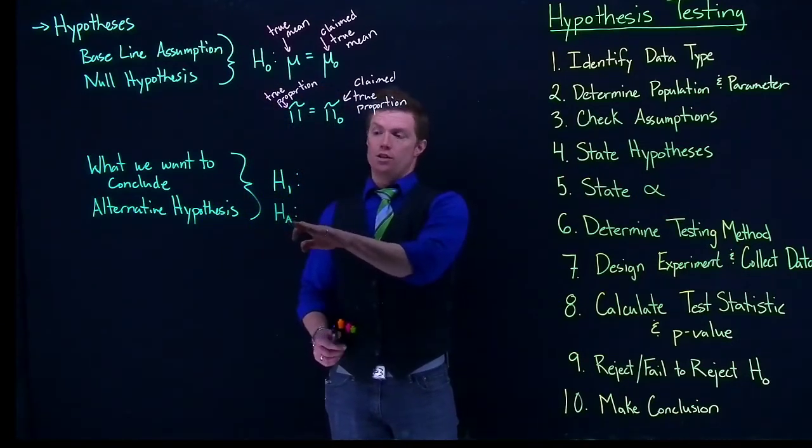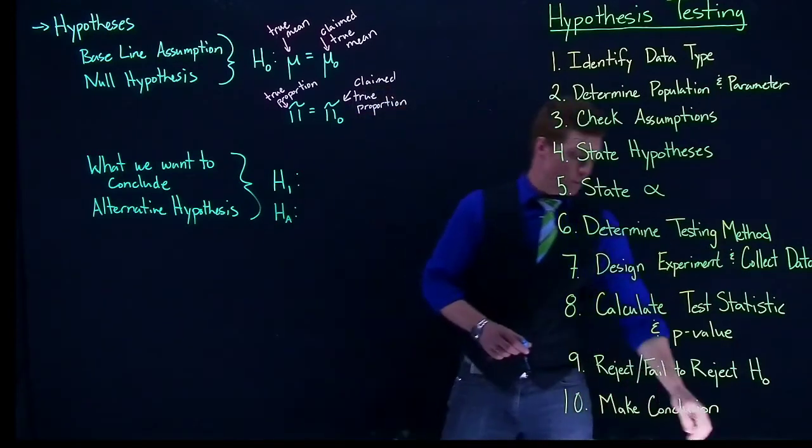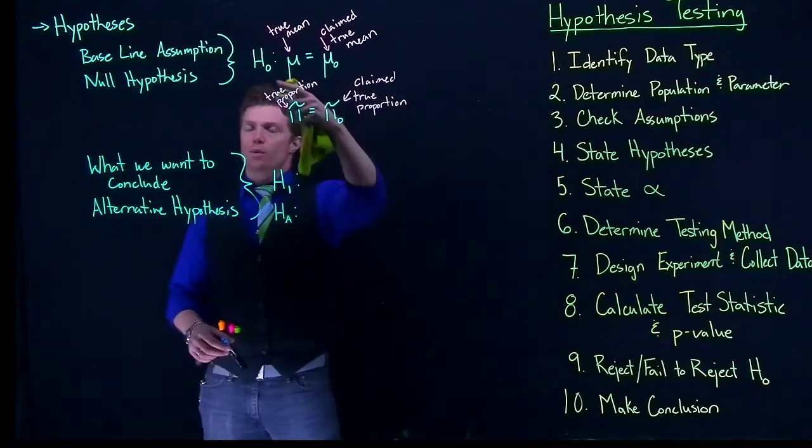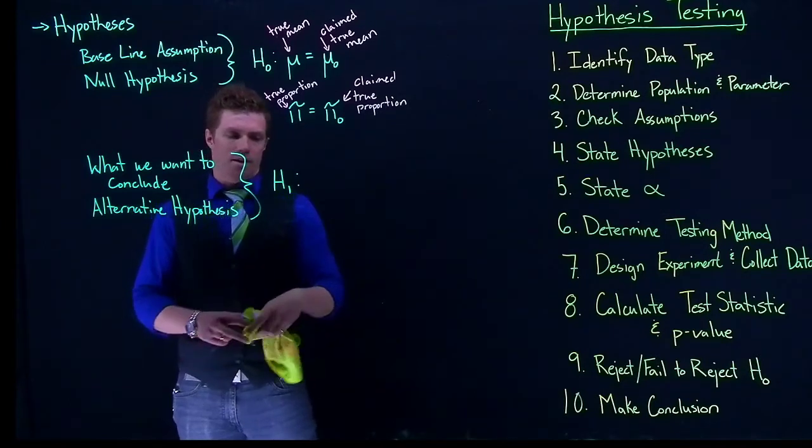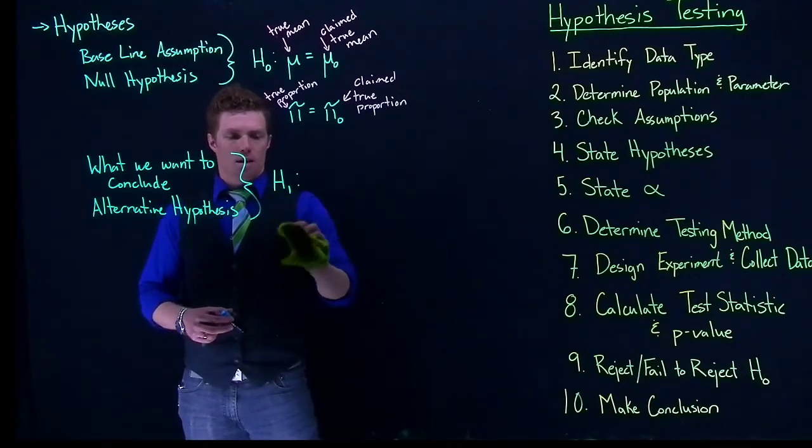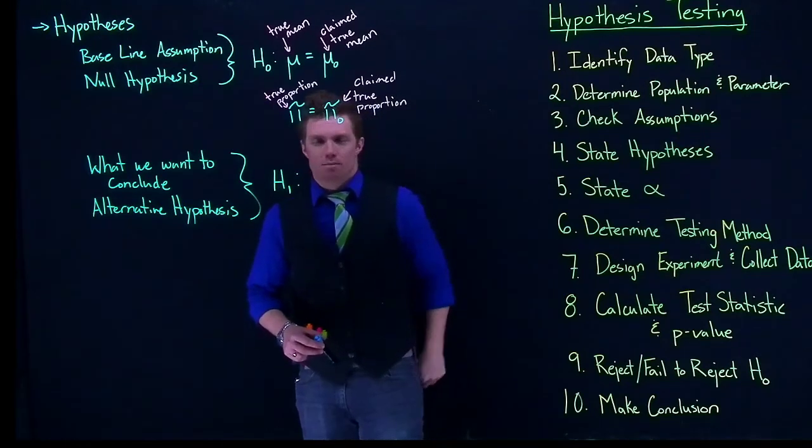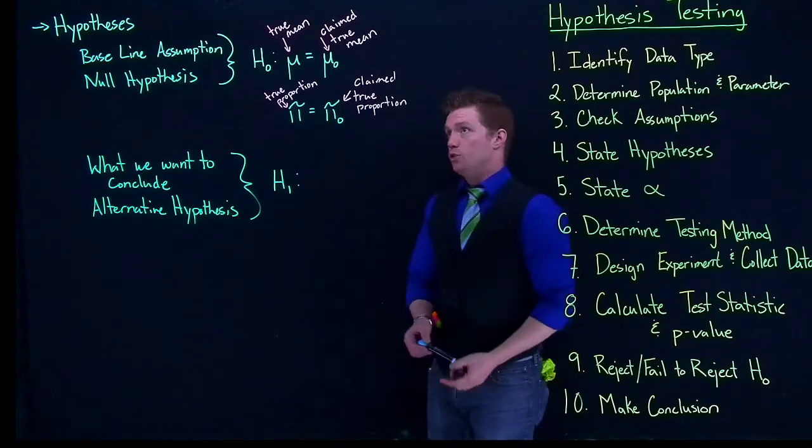I rarely ever use H sub A. I almost always use H sub 1, mostly because I like if we're going to be using numbers up there, let's use numbers throughout the entire situation. But occasionally you will see it as HA. I probably will slip up sometime and put it in there as well. But we have our alternative hypothesis.